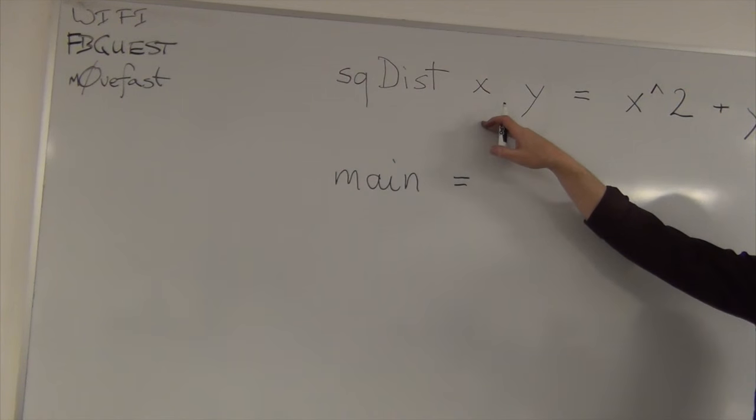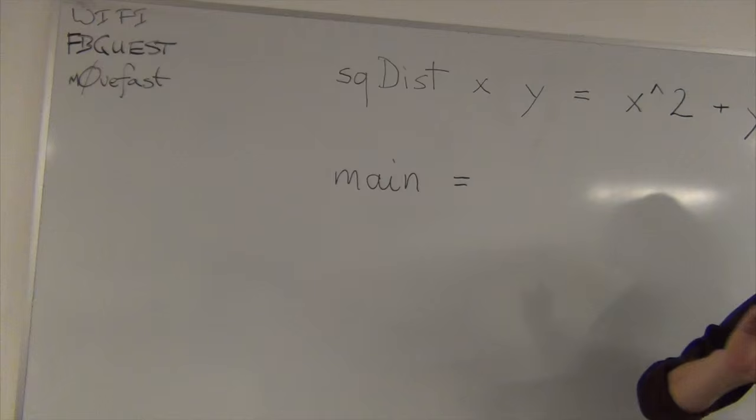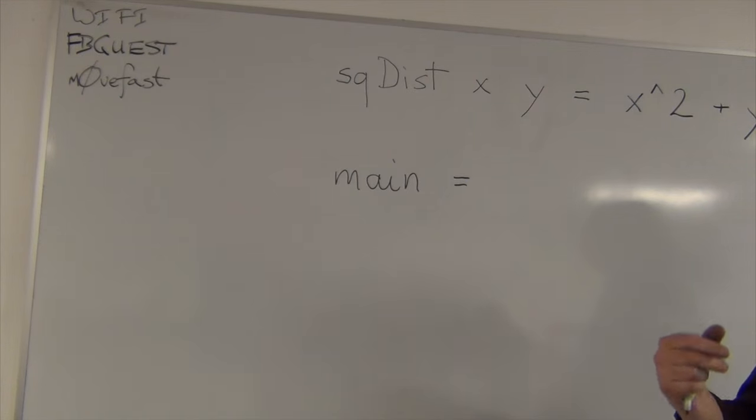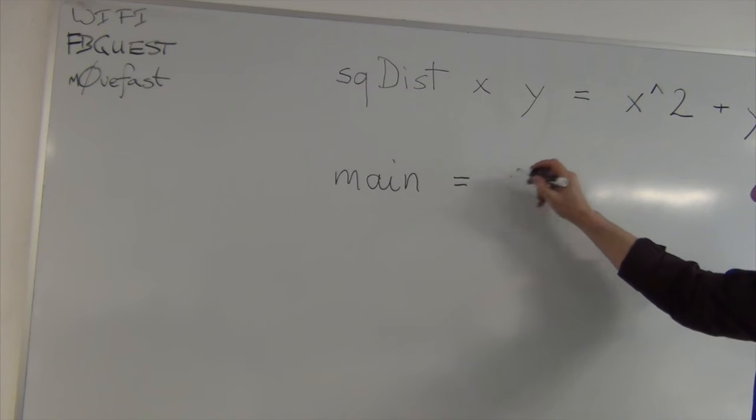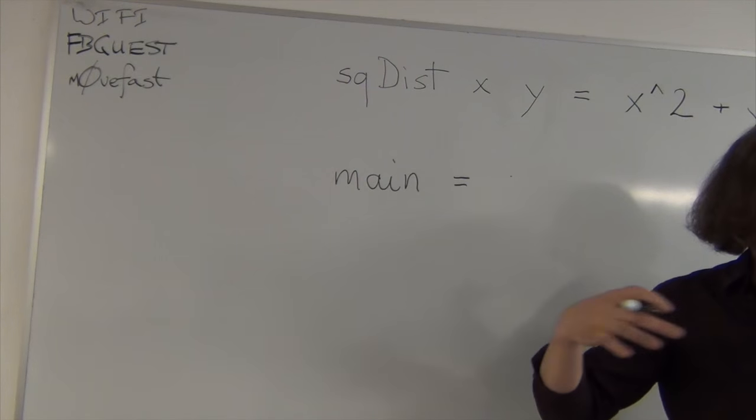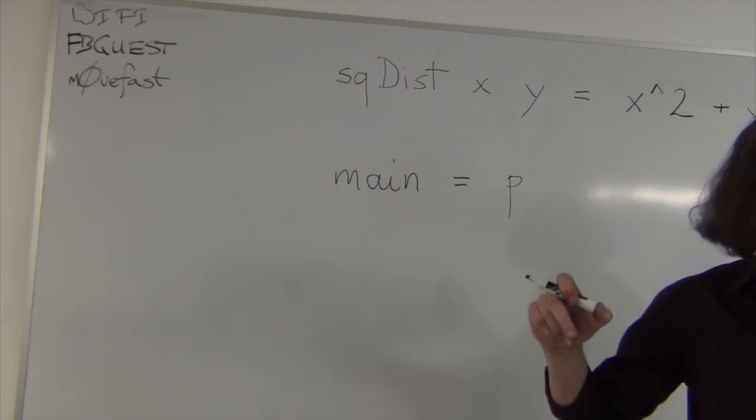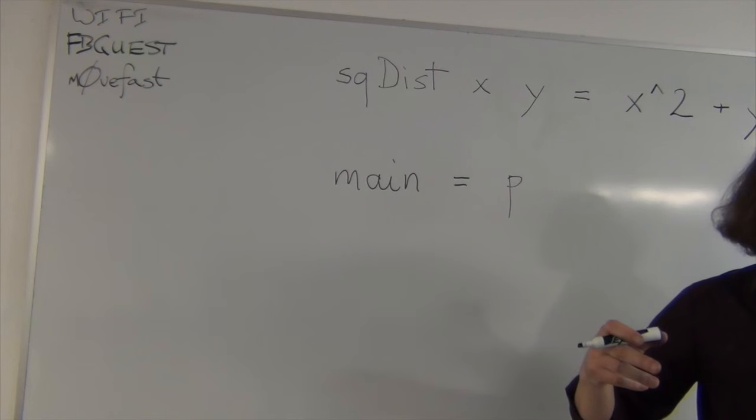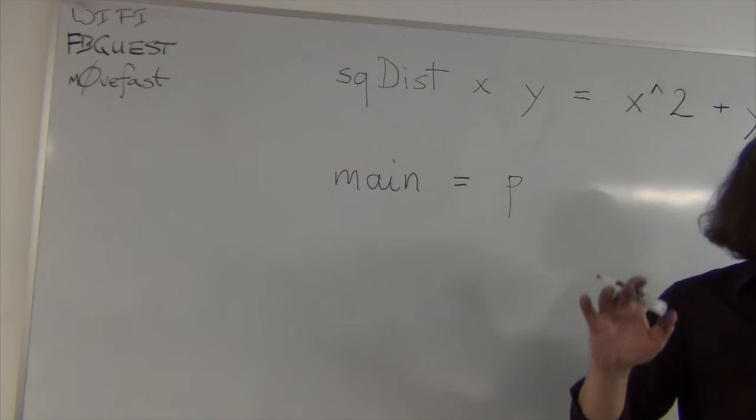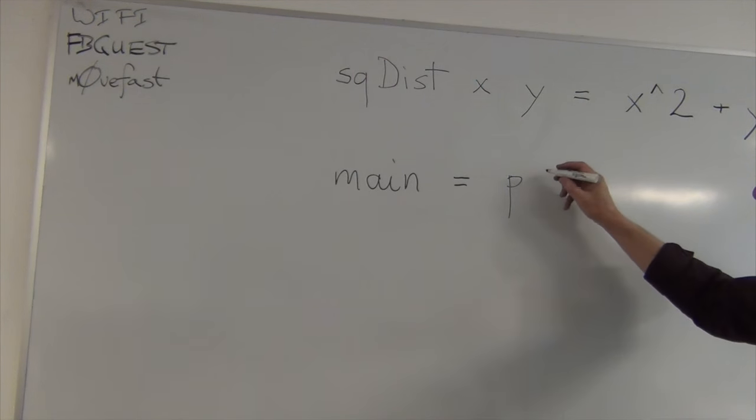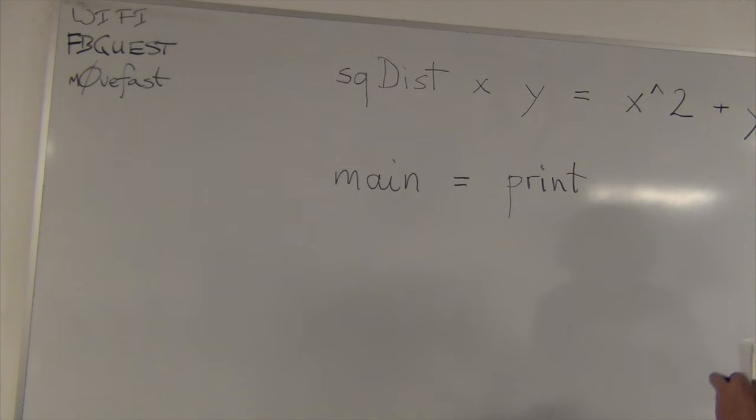So, here we want to call this function and display the result. Okay? So, to display... This will calculate numbers, so we want to display a number. Right? Okay. So, in... There's a generic function called print in the library that will just convert anything that's convertible to a string and print it.